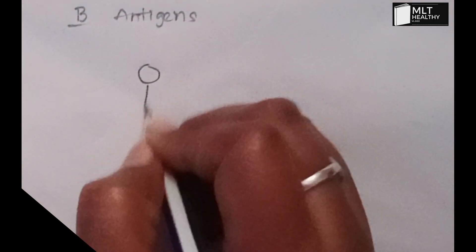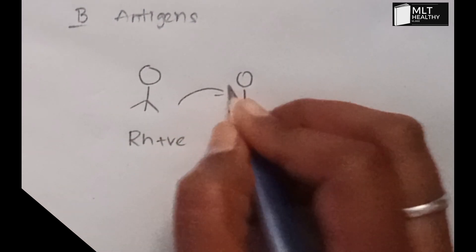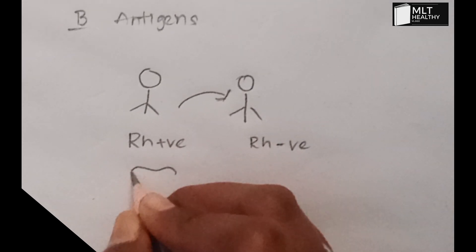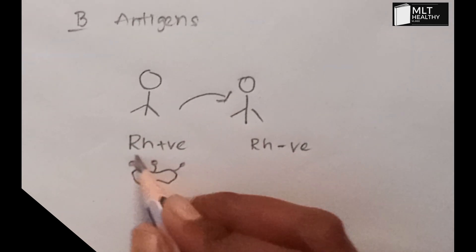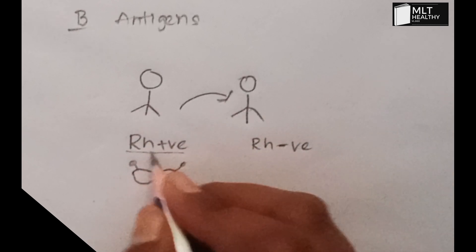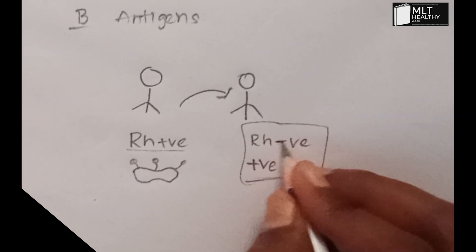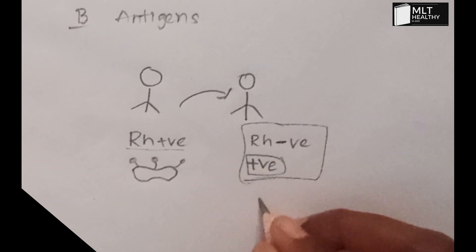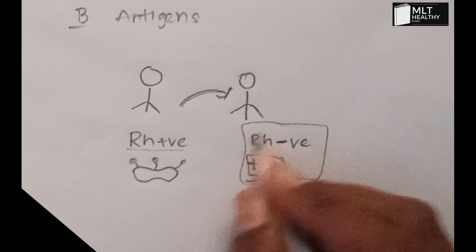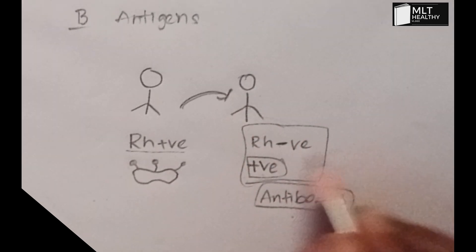Now, in the Rh system, if Rh-positive blood is given to a Rh-negative person, the Rh antigen acts as a foreign particle. Only RBC surface antigens are present in the Rh system — no pre-formed antibodies. So the first time Rh-positive blood is transfused into a Rh-negative person, about 20 days later antibodies begin to be produced.